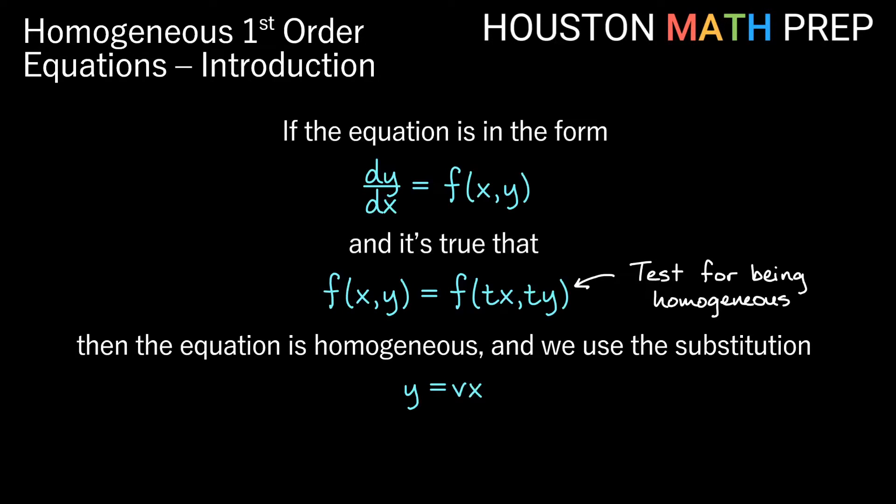We make this substitution, and if I were taking the derivative of both sides, then I actually need to use the product rule, so we would know that dy is equal to vdx plus xdv. So we get these substitutions, you'll notice that we're changing our y's into v's and x's, so we won't have y's anymore in the equation when we make this substitution. The goal of this substitution is actually to turn the equation into a separable equation, and it will do that if the equation is homogeneous.